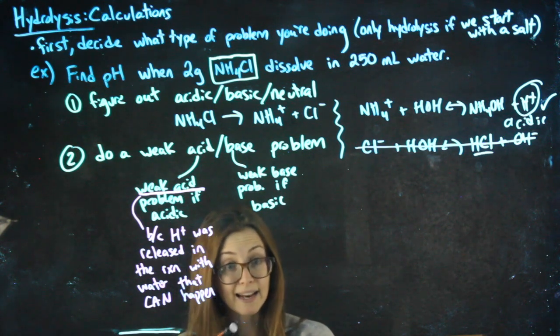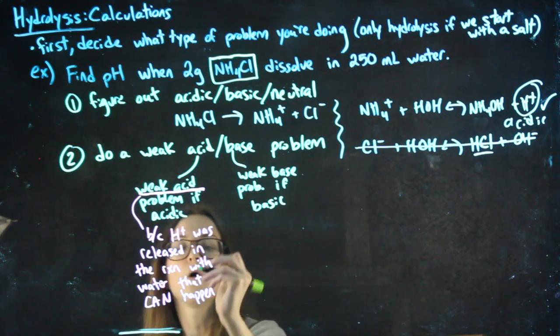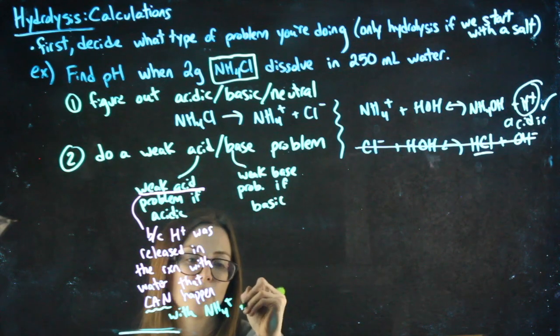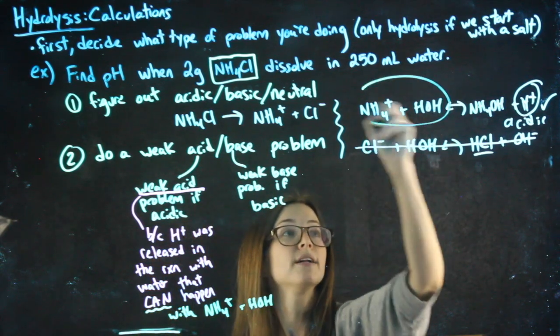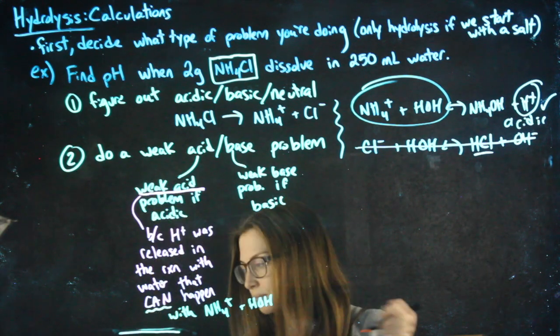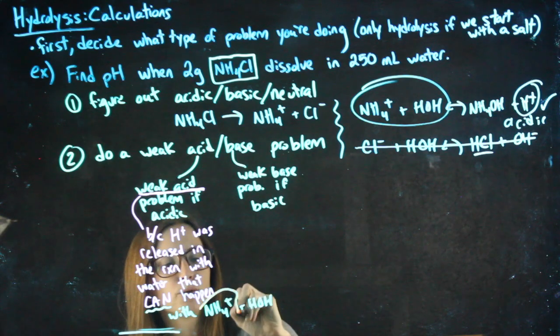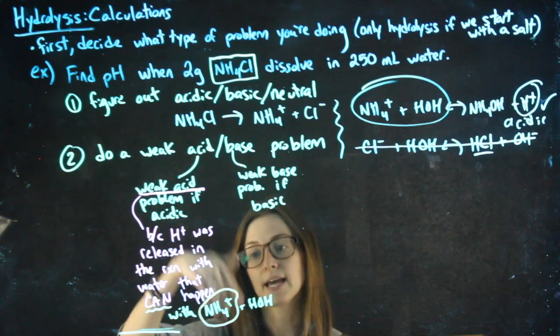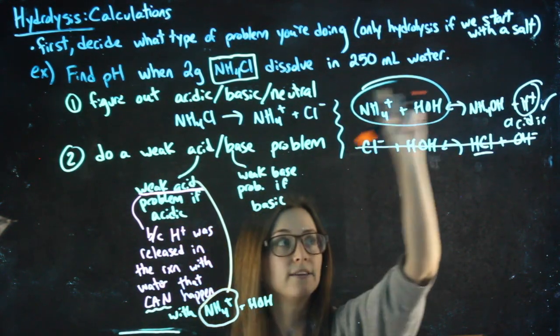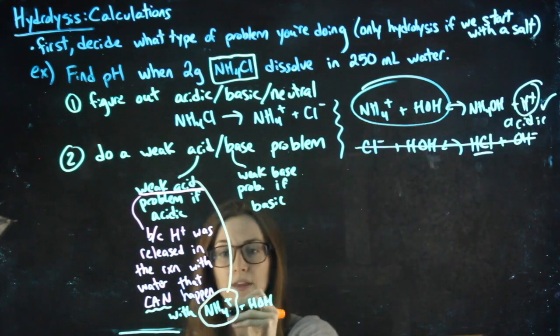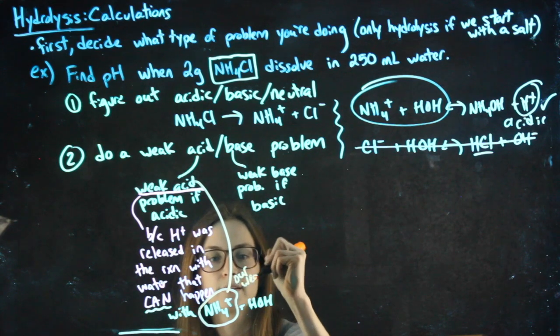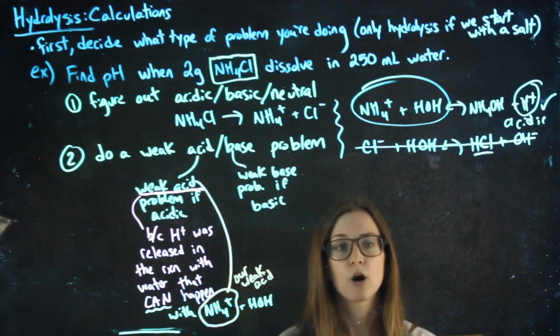That reaction that can happen was with NH4 plus and water, right? It was this reaction, NH4 plus and water. So when we do that weak acid problem, we're always going to use this ion as my, in this case, weak acid. So the ion that reacted with water in the reaction that actually happened, that ion, the NH4 plus, that is going to be our weak acid in our weak acid problem.